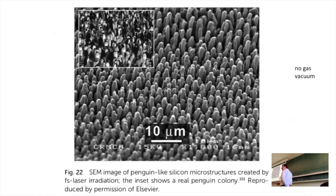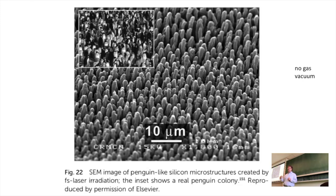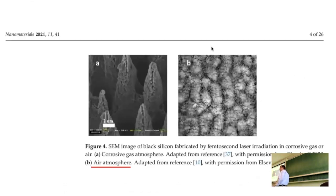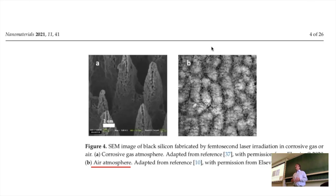A technique developed by Mazur with no gas in vacuum — just the laser — produces what they call a penguin-like silicon microstructure. So they're not pine trees, not tooth-like, they're penguin-shaped. This is actually compared to a picture of a penguin colony. You can control or modify the structure by modifying the conditions. Performing the same trick in air also changes the surface, though it seems not as much as with SF6.